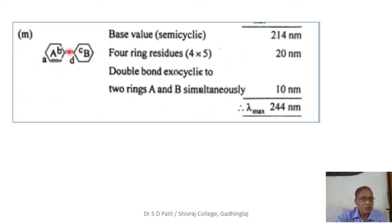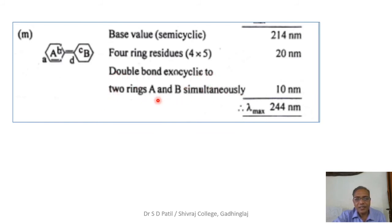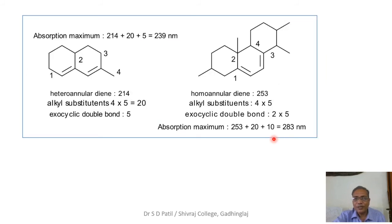This is a semi-cyclic diene because one double bond is inside the ring and the other is outside. The base value for semi-cyclic diene is 214 nm. There are four ring residues A, B, C, and D, adding 20 nm. The double bond is simultaneously exocyclic to both ring A and ring B, so two exocyclic double bonds add 10 nm. Total lambda max is 244 nm.